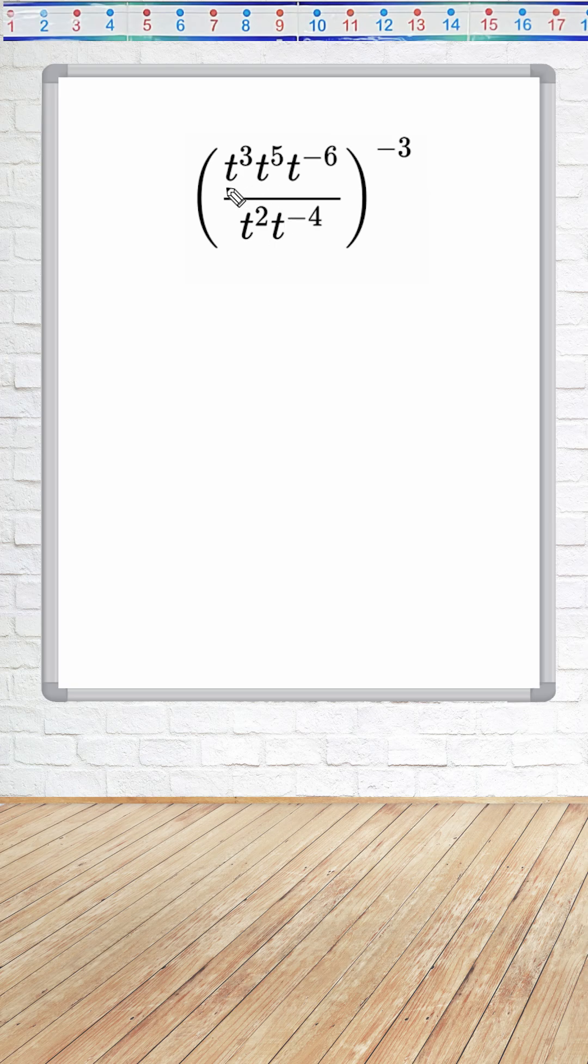Now notice that we are multiplying the same base together, and whenever you are multiplying the same base together, you take the exponents and add them. So our numerator can be written as t to the second power, because 3 plus 5 is 8, and 8 minus 6 is positive 2.